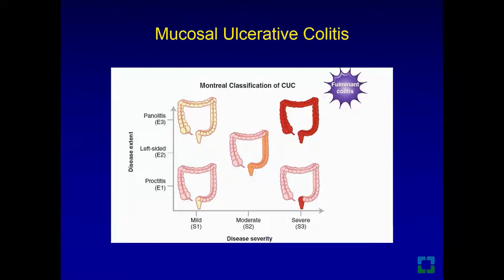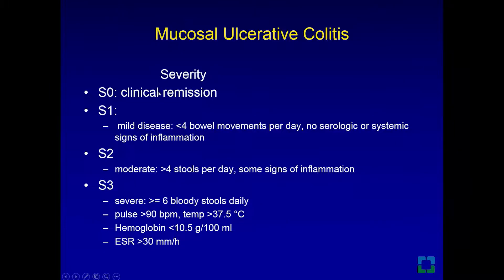The Montreal classification categorizes ulcerative colitis by severity and extent. Extent can be localized to the rectum, left-sided (rectum and left colon), or pancolitis when it extends beyond the splenic flexure toward the cecum. Severity ranges from S0 (clinical remission) to S1 (mild disease, less than four bowel movements a day with no systemic signs of inflammation).